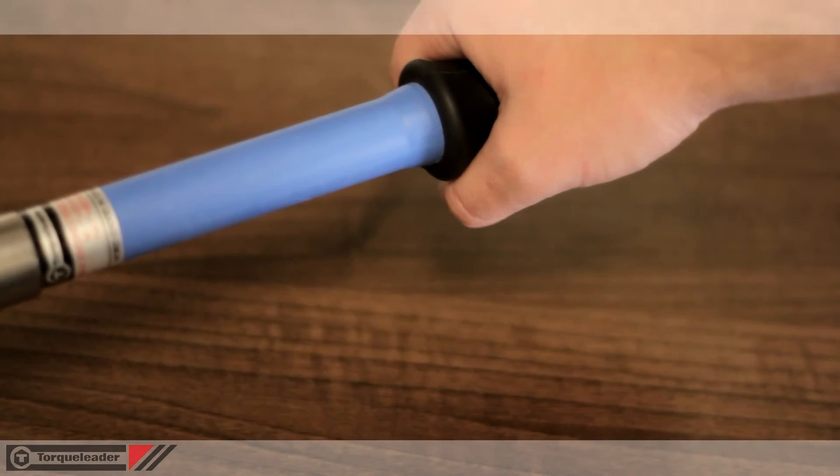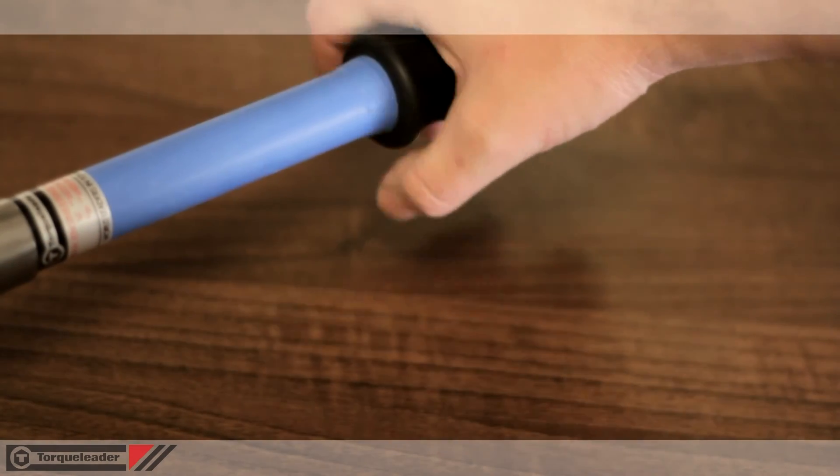Slipping wrenches are not length dependent. The position of the operator's hand has no influence on the torque delivered.